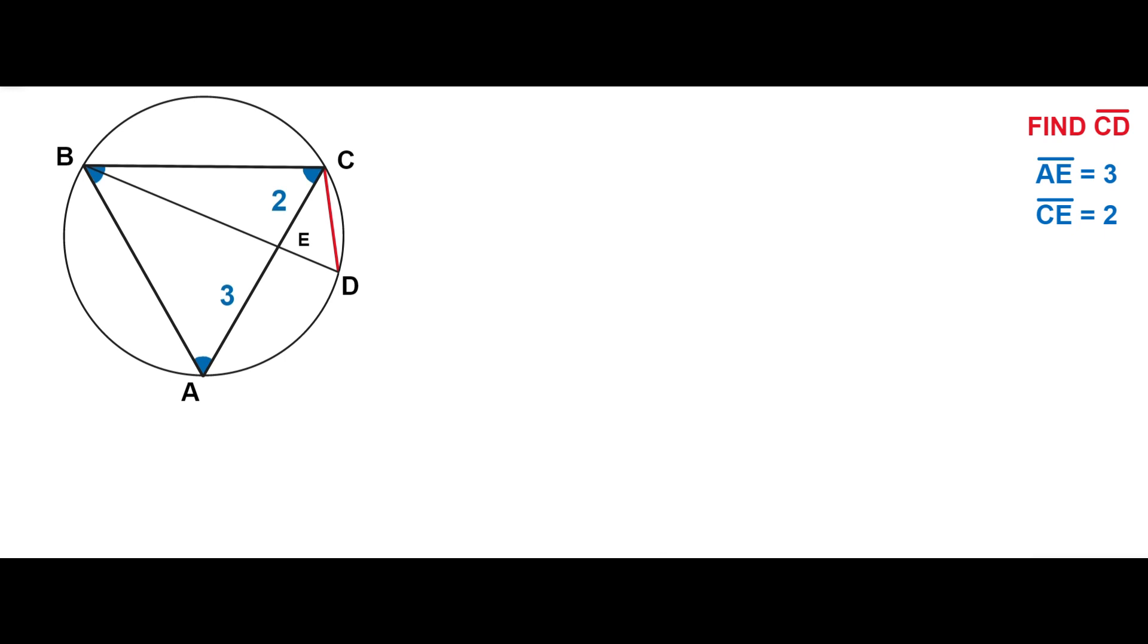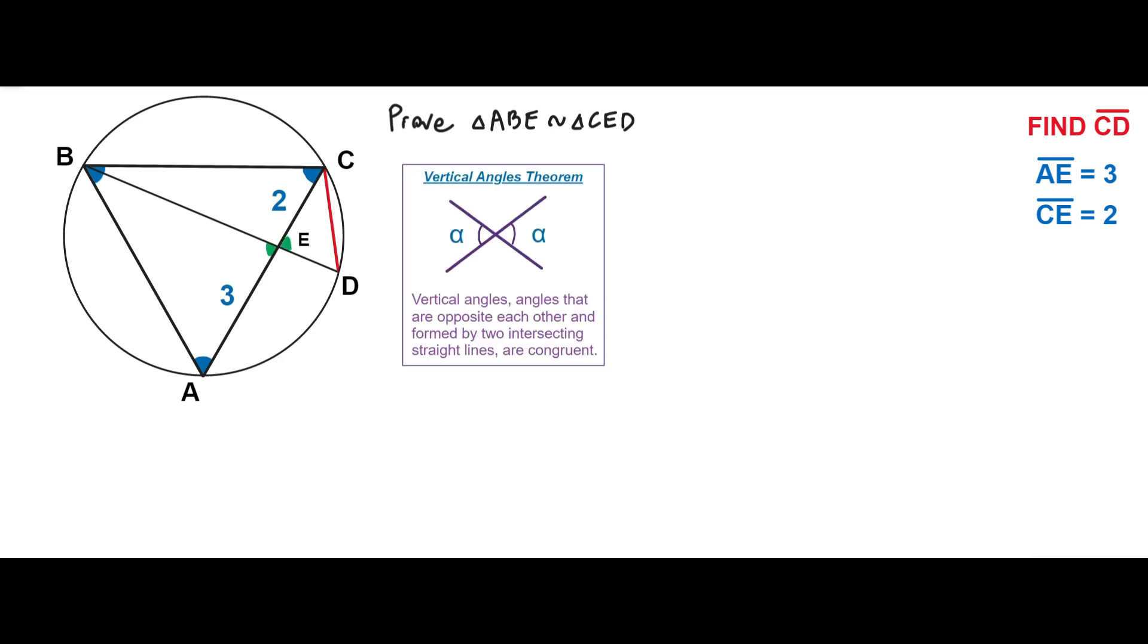First, let's prove that the triangles ABE and CDE are similar. The angles BEA and CED are congruent according to vertical angles theorem. And the angles BAC and BDC lie on the same arc BC. Therefore, according to inscribed angle theorem, these two angles are also congruent. In the triangles ABE and CED there are two congruent angles, so we have proved that these two triangles are similar.